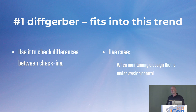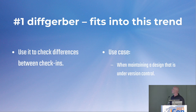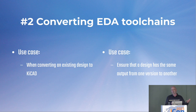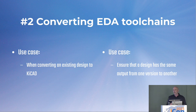Does DiffGerber fit into this trend? If you are generating output files on a server, it's really important to be able to see quickly what the changes are. There's a use case for maintaining versions and outputs of your designs. I'm also interested in converting between EDA tool chains — if you're importing from Altium or Eagle, the final step would be asking: do my Gerber files look similar? Automating that with a pixel diff on the Gerber outputs would be an important tool, giving you that extra guarantee that your files look similar.